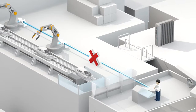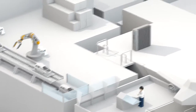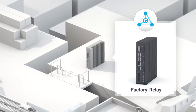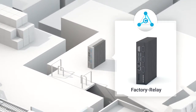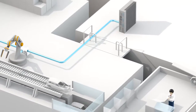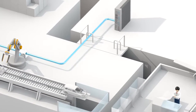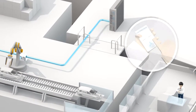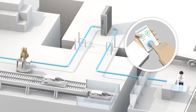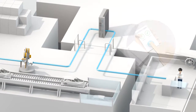Introducing the factory relay. The factory floor device securely connects to the factory relay. The production floor manager simply opens his factory relay app and establishes a secure connection to the factory relay.